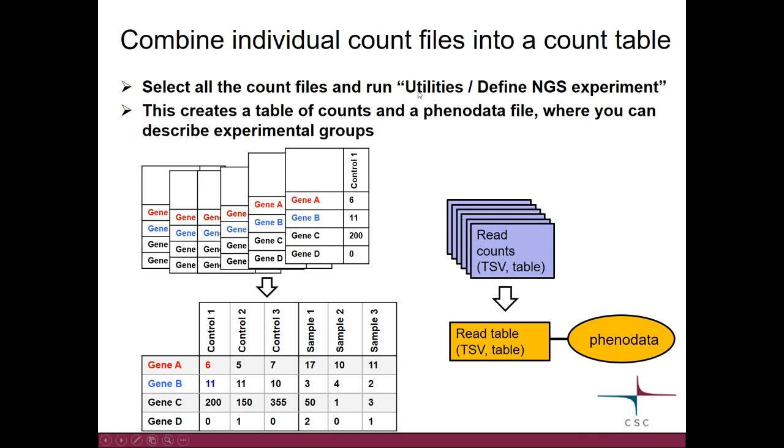We do this using the Utilities tool, Define NGS Experiment, and this tool will take all the count files for the different samples and put them in one count table. You will also get another result file called Phenodata file, and this is a very specific one in Chipster because it allows you to describe your experimental setup.